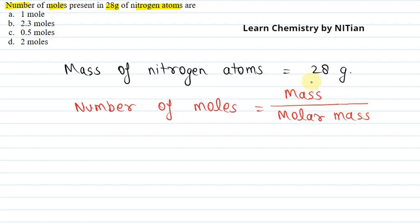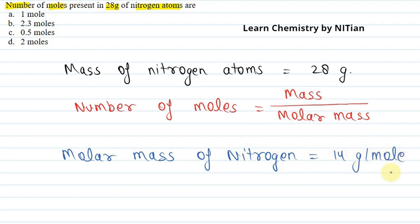For nitrogen atoms, if we know the molar mass, we can easily calculate the number of moles. The molar mass of nitrogen is 14 grams per mole.